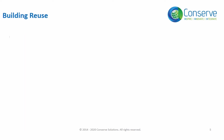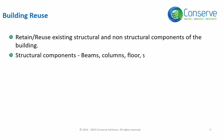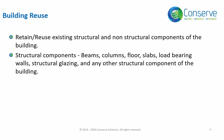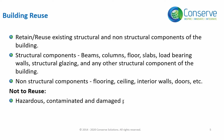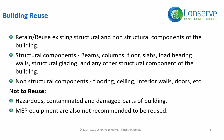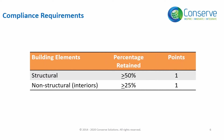Let us start with the first strategy: building reuse. Retain or reuse existing structural and non-structural components of the building. Structural components include beams, columns, floor slabs, load-bearing walls, structural glazing, and any other structural component. Non-structural components include flooring, ceiling, interior walls, doors, etc. It is not recommended to reuse hazardous, contaminated, or damaged parts. MEP equipment is also not recommended to be reused, as older MEP equipment is generally inefficient. Points are awarded based on the percentage of surface area retained or reused.